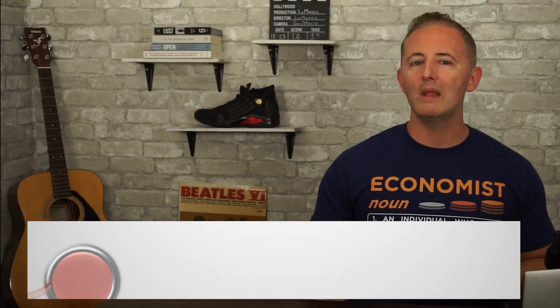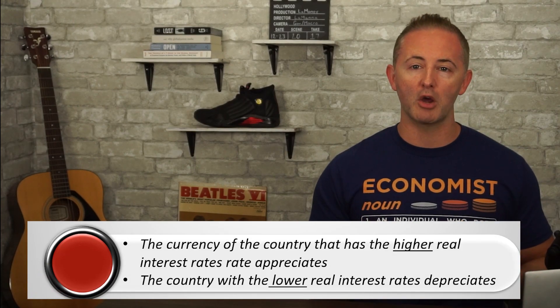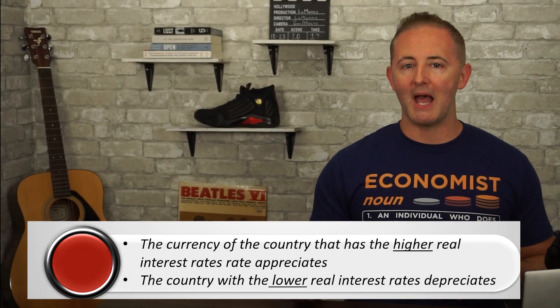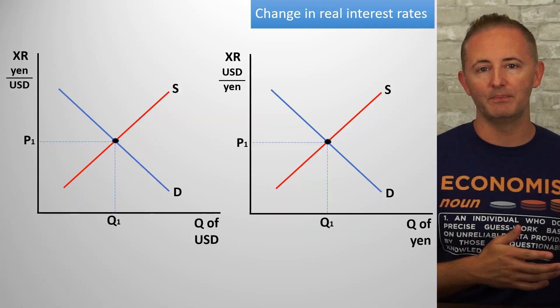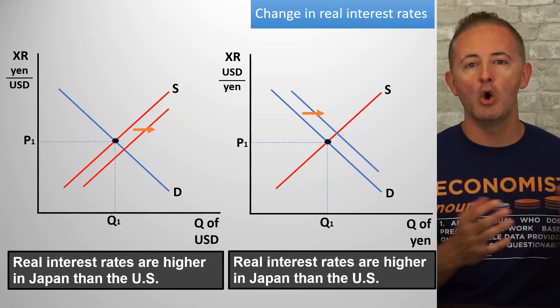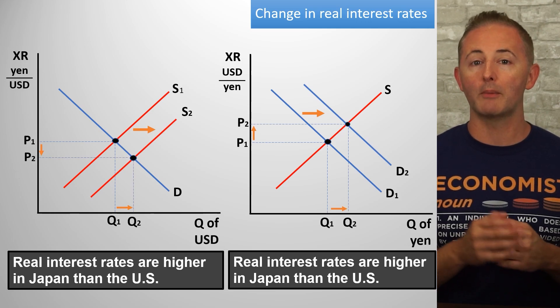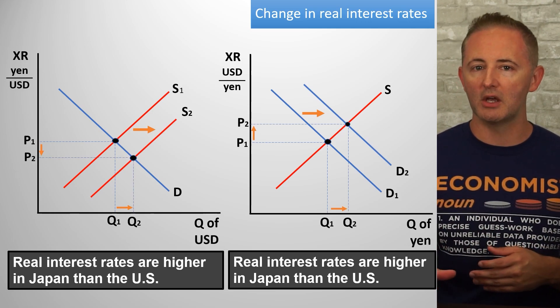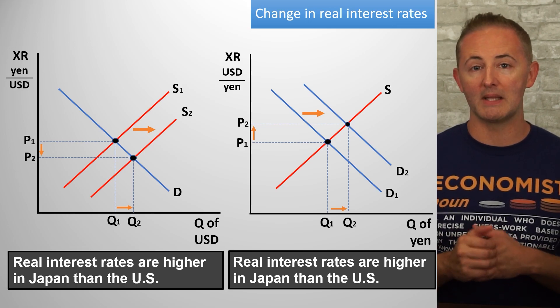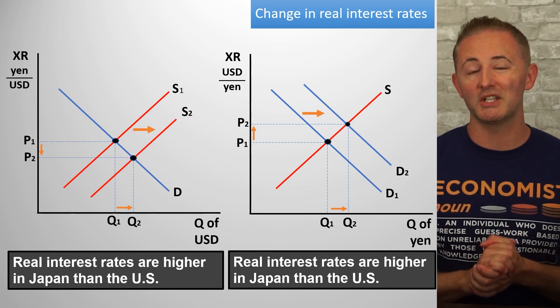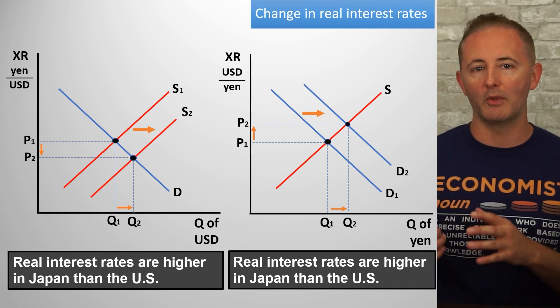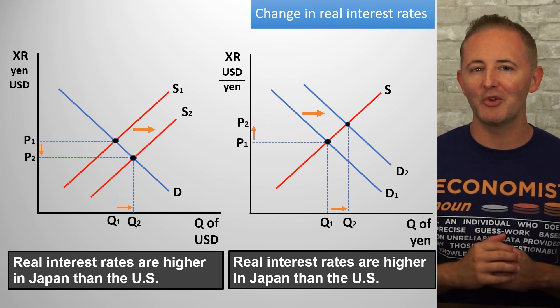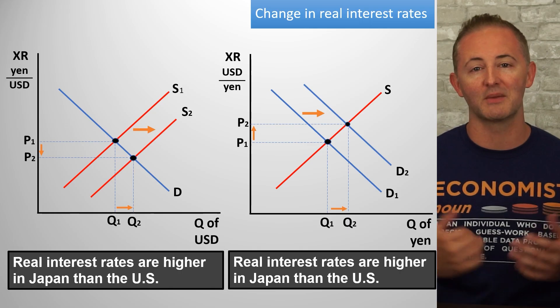You might remember from the previous video that changes in real interest rates are one of the things that affect the foreign exchange market. This is because if savers want to buy financial assets like bonds in a foreign country, they first need to convert their currency to that country's currency. So if real interest rates rise in Japan, we would expect American savers to want to buy Japanese financial assets, and to do so, the demand for the yen increases as well as the supply of the dollar. The big thing here is just to remind you that we can see capital inflows on both the foreign exchange and the loanable funds model, so make sure you always read the question carefully so you don't get a question wrong for doing something silly.